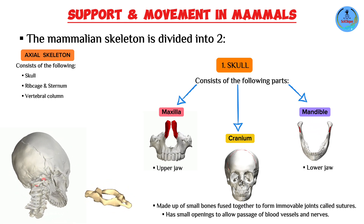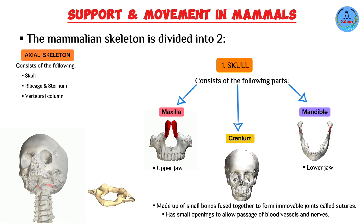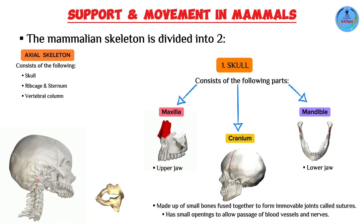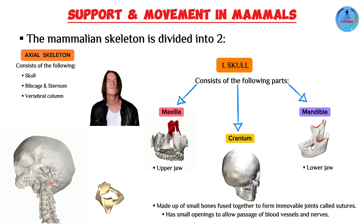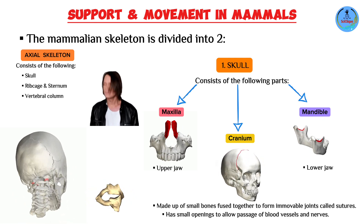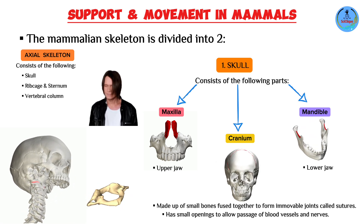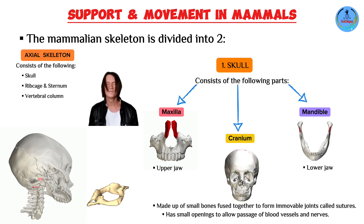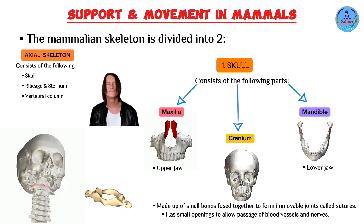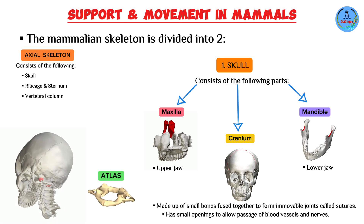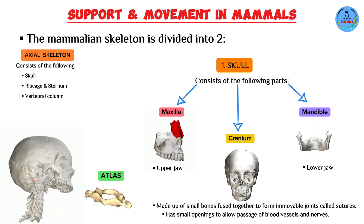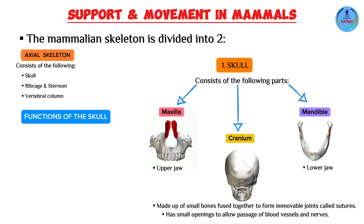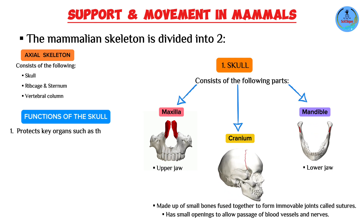The occipital condyles at the base of the cranium articulate with the first bone of the vertebral column. When two bones articulate, they form a joint, and this joint is very important because it allows us to nod our head. Nodding is the result of the joint formed between the occipital condyles and the first bone of the vertebral column, which is known as the atlas.